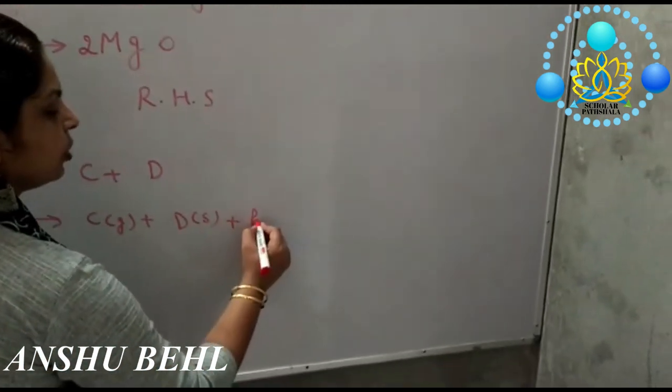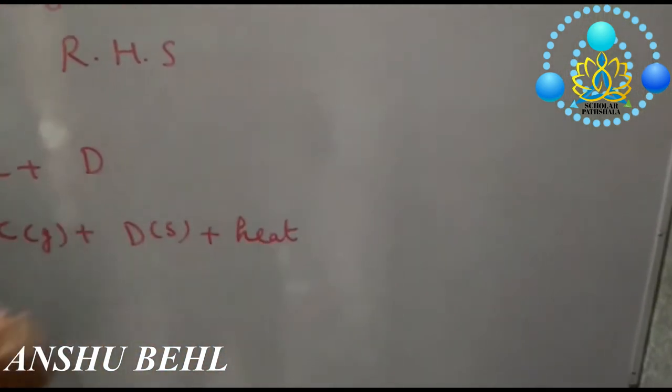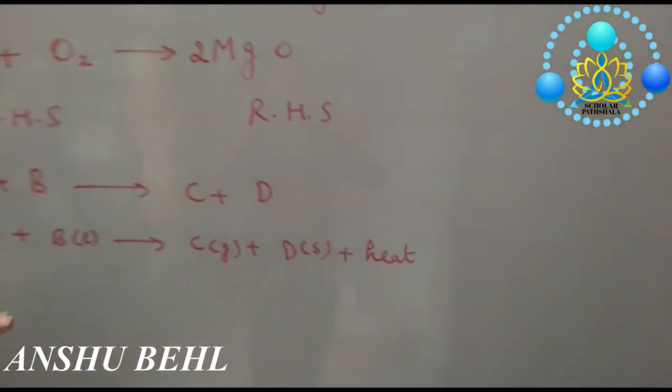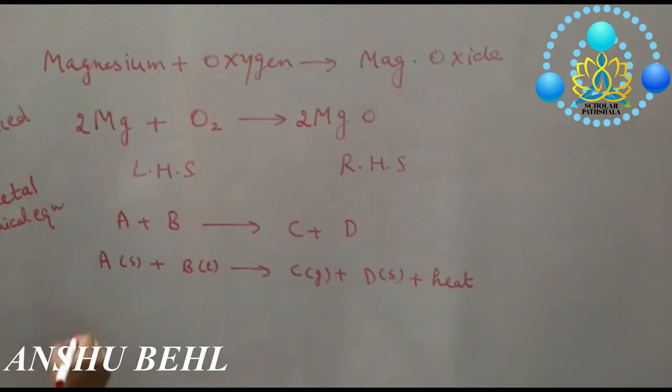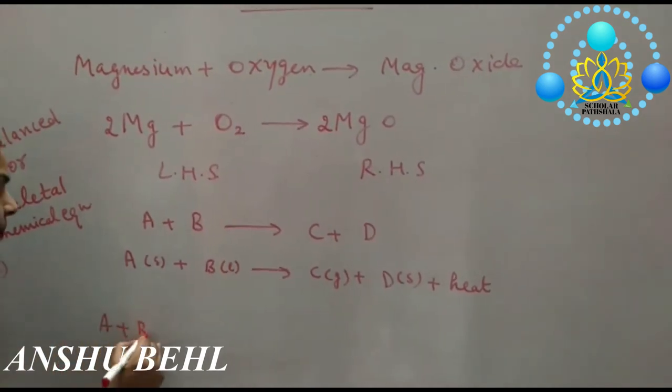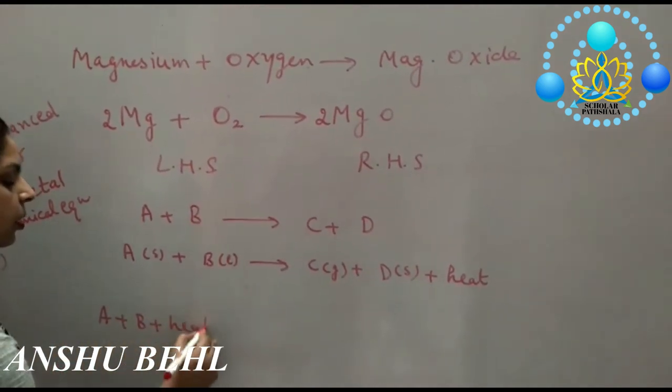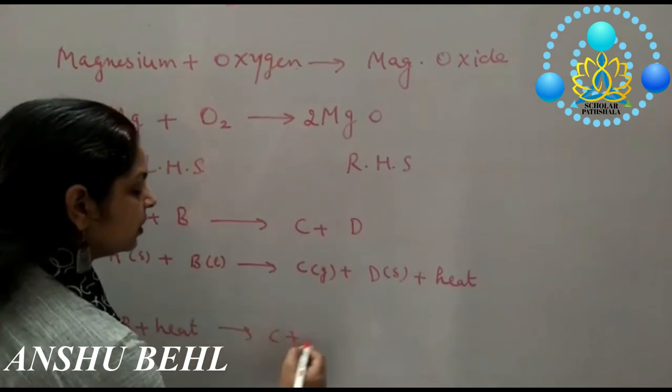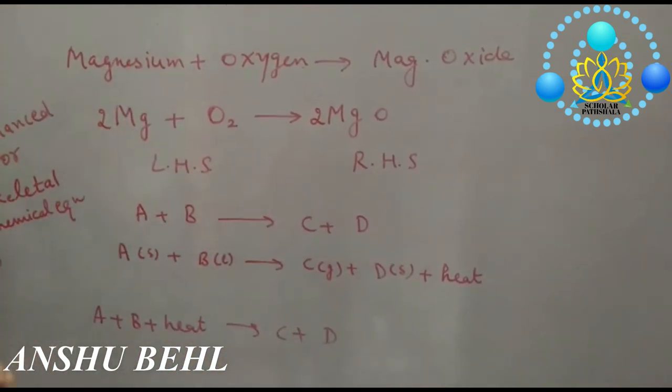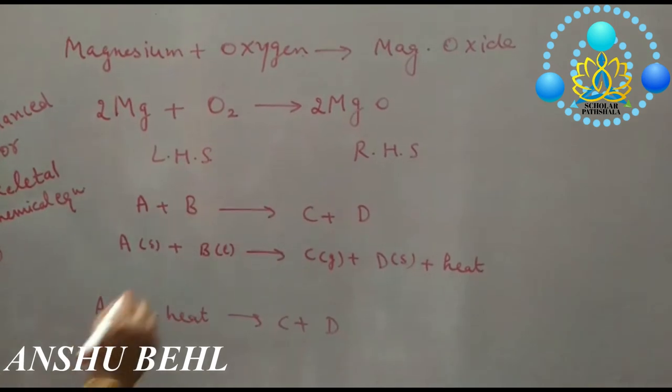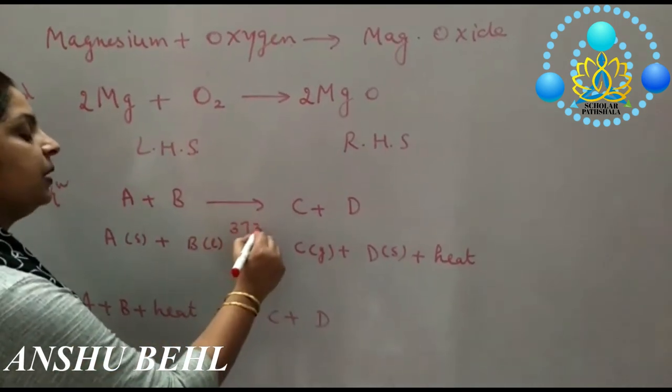After that, if reaction is exothermic, you can write plus heat on product side. If reaction is endothermic on reactant side, you can write A plus B plus heat gives you C plus D. If any other condition is there, say temperature 373 Kelvin, pressure 200 atmosphere.